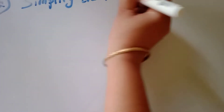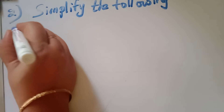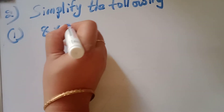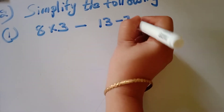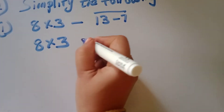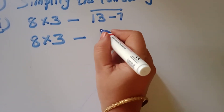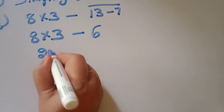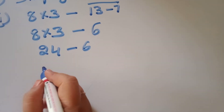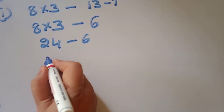Simplify the following. 8 into 3 minus 13 minus 8. First, solve the bracket: 13 minus 8 is 5. Wait, 8 into 3 minus open bracket 13 minus 8 close bracket. 13 minus 8 is 5; then 8 into 3 is 24 minus 5, which equals 18.